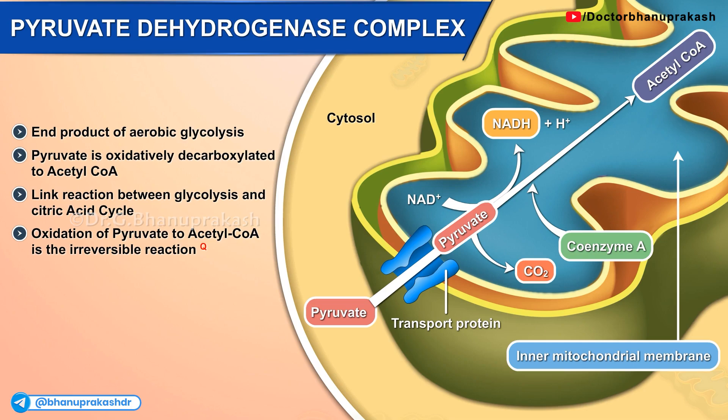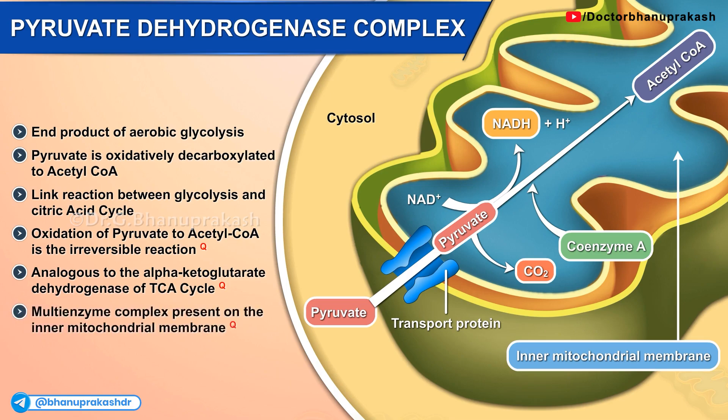Pyruvate dehydrogenase complex is analogous to the alpha-ketoglutarate dehydrogenase of the citric acid cycle. The PDH complex, also known as the pyruvate dehydrogenase complex, is a multi-enzyme complex present on the inner mitochondrial membrane.